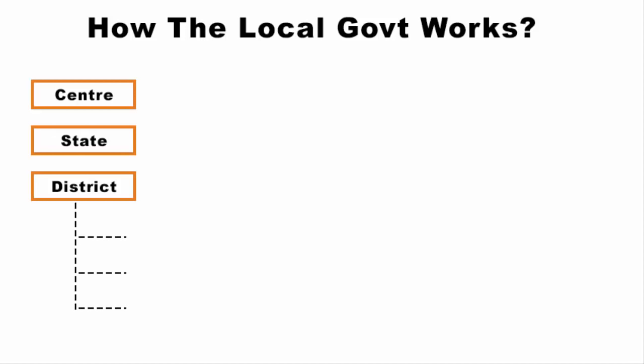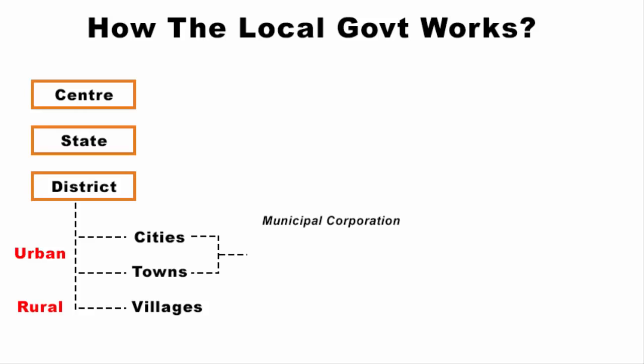In a district we have cities, towns and villages that are categorized under urban and rural areas. If it is an urban area, then the local governing body is a municipal corporation, a municipality, or a city council.